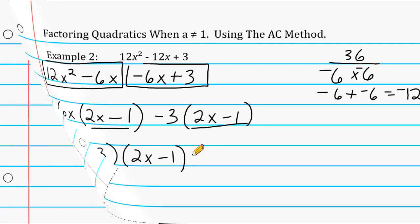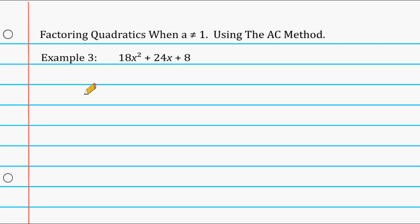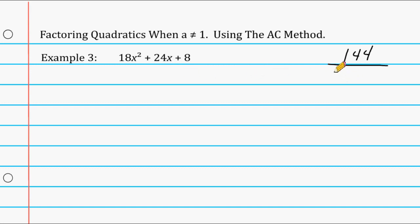Let's do another example. We take our a term and c term — 18 and 8 — and multiply them together to get 144. We need two factors of 144 with a sum equal to our b term, which is 24. Since 12 times 12 is 144 and 12 plus 12 is 24, our two factors are 12 and 12.